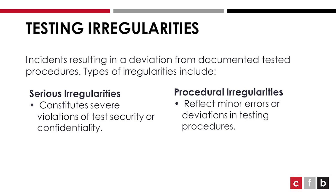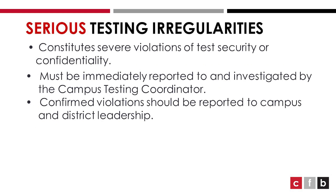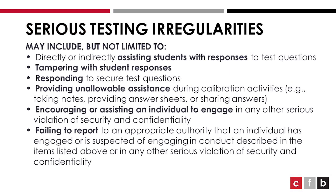Incidences resulting in a deviation from documented testing procedures result in two types of irregularities: serious irregularities and procedural irregularities. A serious testing irregularity constitutes a severe violation of test security or confidentiality. These must be immediately reported to and investigated by the campus testing coordinator, and confirmed violations should be reported to campus and district leadership. Serious testing irregularities may include but are not limited to the following.